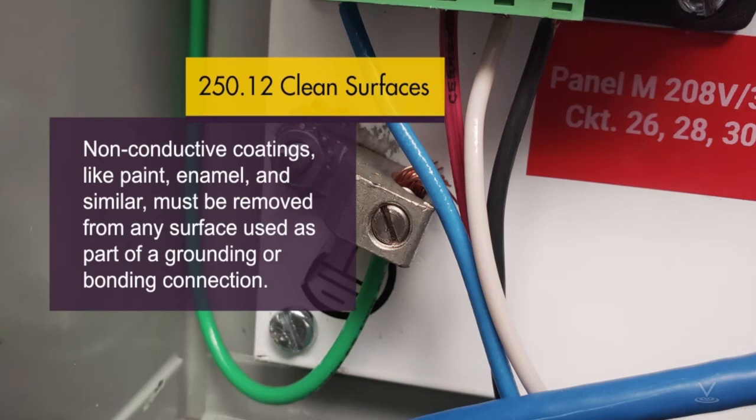Again, non-conductive coatings like paint, enamel, and similar must be removed from any surface that's used as part of a grounding or bonding connection. Not really a technical change—that's been in the code for a very long time—but just an editorial clarification.